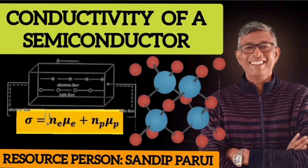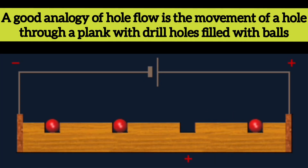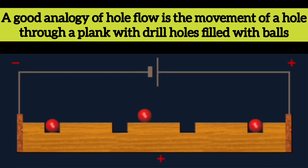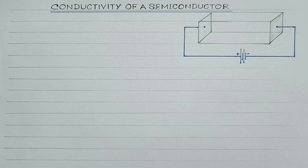Students, conductivity of a semiconductor ko samajhne ke liye electron aur hole flow ka concept clear hona bahut zaroori hai. Yaha pe aap dekh sakte hai ki jo balls hain jinko ki electrons maan rahe hain, wo right side ki taraf move kar rahi hoti nazer aati hai. Lekin jo holes hain, positive charge carriers hain, wo left side ki taraf move karte huay nazer aati hai. Is analogy se hum charge carriers ke flow ko samajh sakte hai.